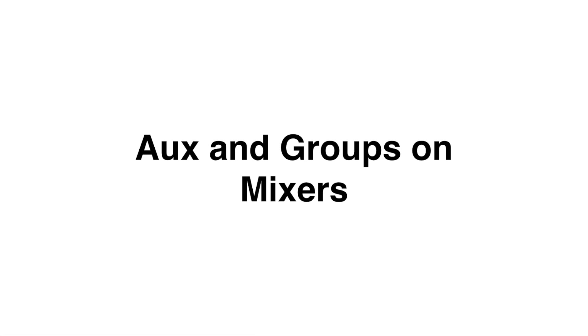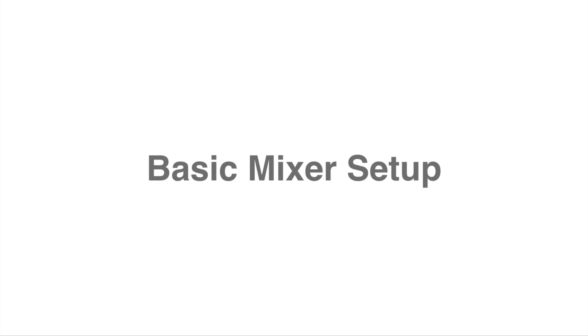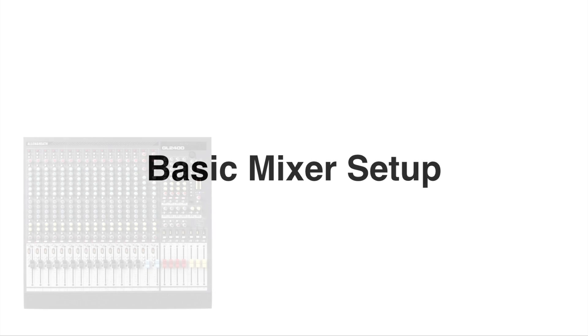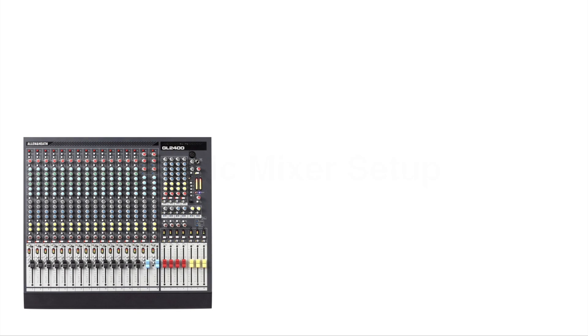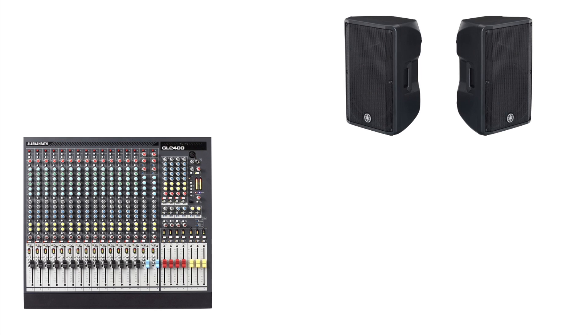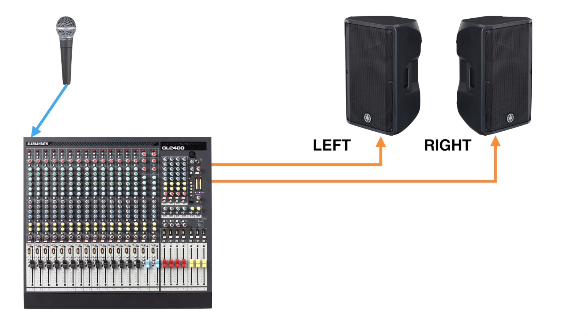This video will describe using auxiliaries and groups on mixers. To begin, let's describe a basic mixer setup. In our setup, we have a mixer and two powered speakers. We have a microphone that is connected to the channel input, and then the output of the mixer is sent to the left and right outputs.